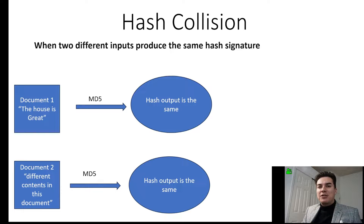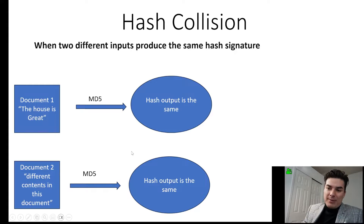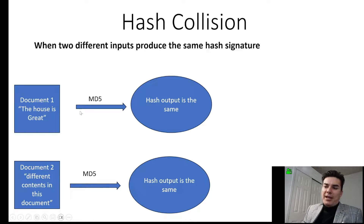So with a hash collision, that's when two different inputs produce the same hash signature. For example, there's a document one that says 'the house is great' and you put it through the MD5 algorithm and you have a certain output.